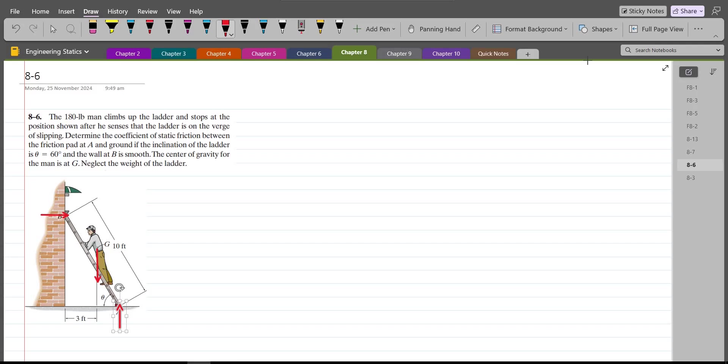But what should be the direction of the frictional force? Should it be towards the wall or away from the wall? So we can sense that if the ladder falls, then the ladder will move away from the wall. This will be the direction of motion of the ladder. So the frictional force will act opposite to the direction of the relative motion. So the frictional force will be directed towards the wall.